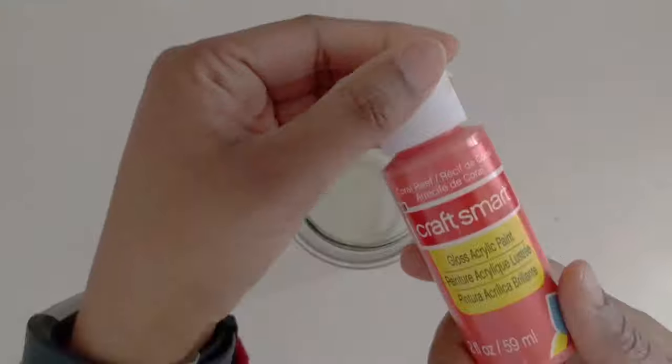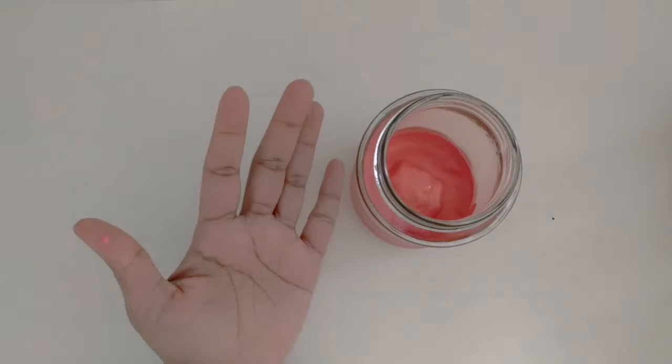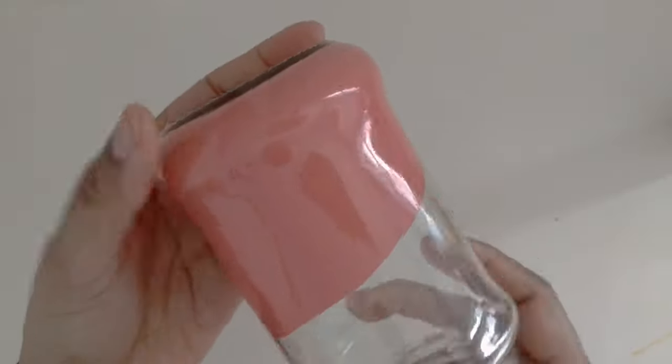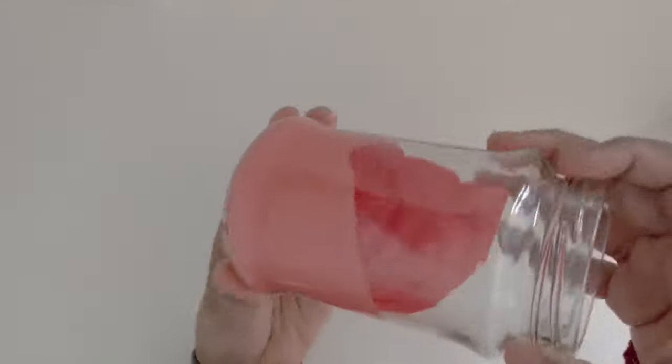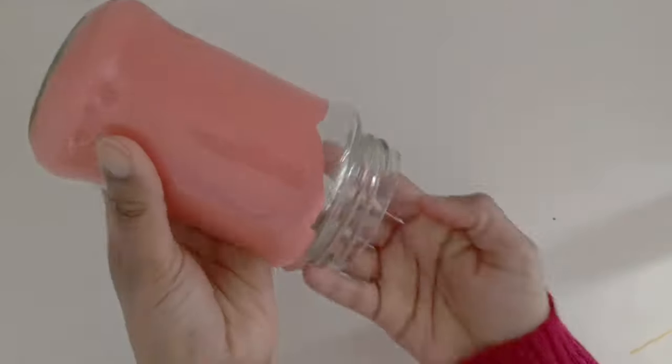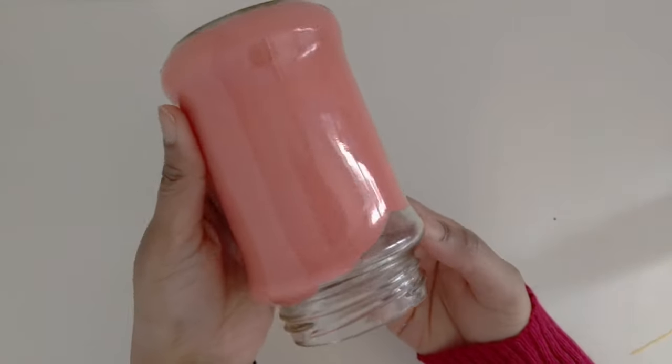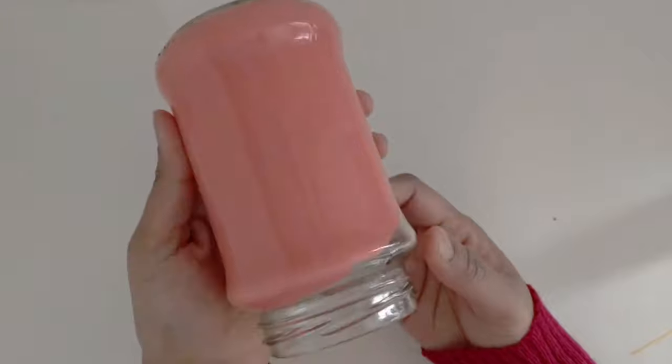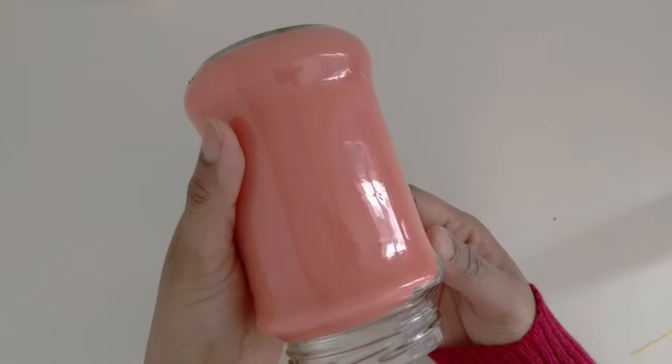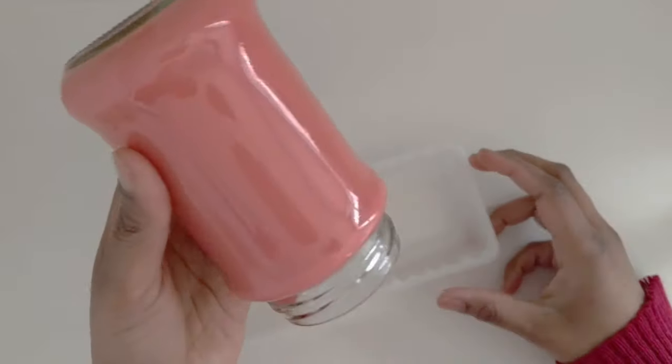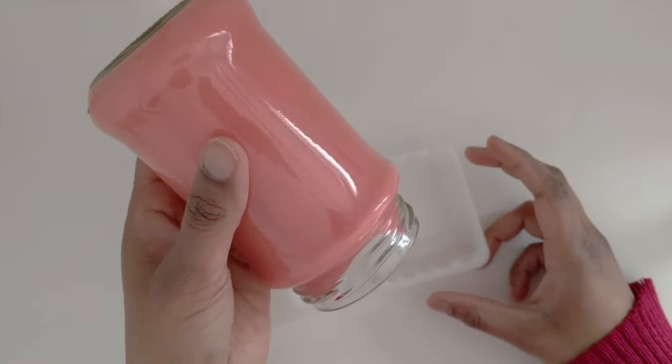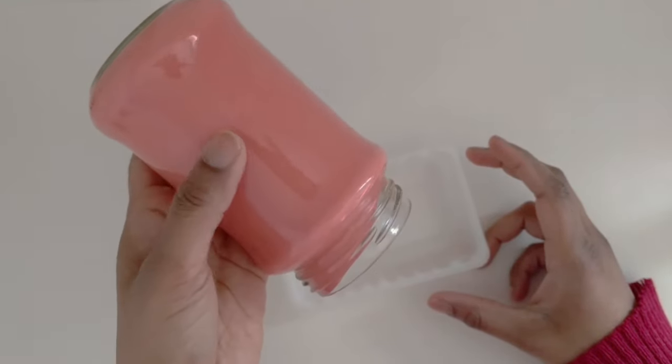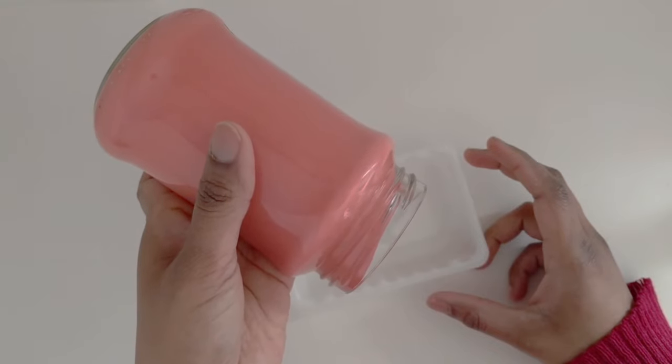For the next one, I am going to use a glossy acrylic paint. What you want to do is simply pour some of the paint into your jar and keep moving your jar in a circular motion so that the inside of the jar gets coated with paint. You may pour the excess paint back into the paint container. You can place your jar upside down on a cardboard or a wax paper and let it dry overnight.